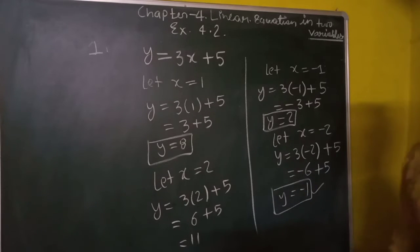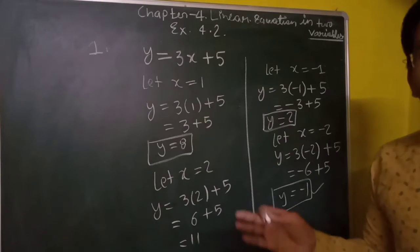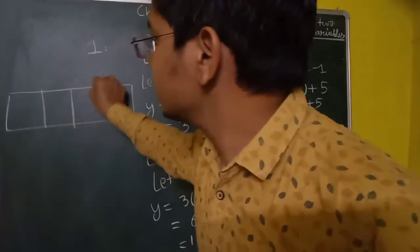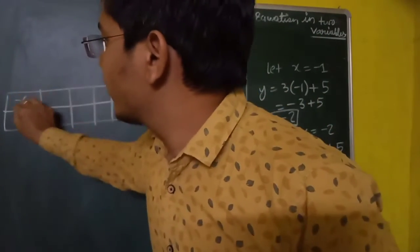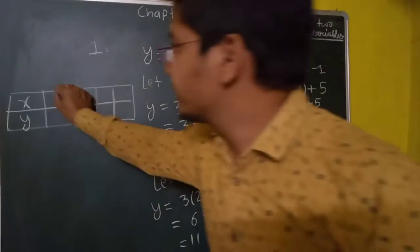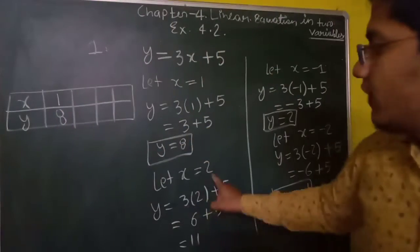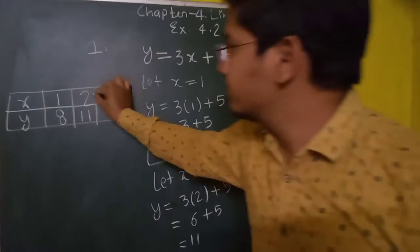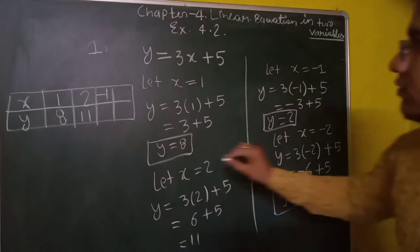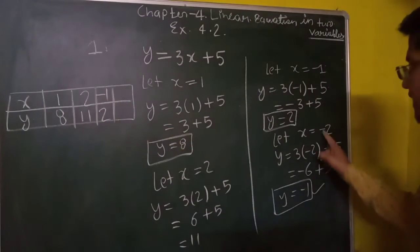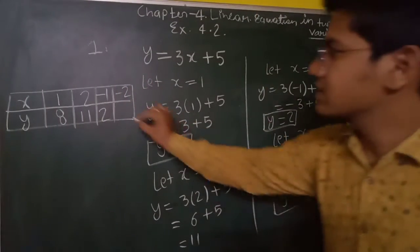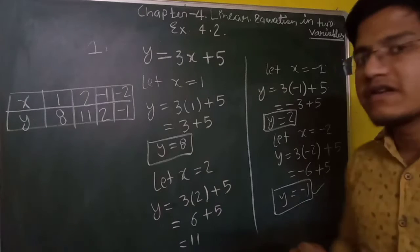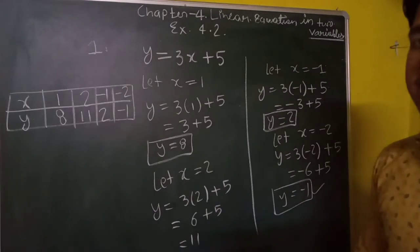These all are known as solutions of the given equation. If we put a value of x, we get a corresponding value of y. Now we can construct a table. We are considering values of x and we get corresponding values of y. x equals 1, y equals 8; x equals 2, y equals 11; x equals minus 1, y equals 2; x equals minus 2, y equals minus 1. These are 4 values of x corresponding to y. Now what is the question asking? Which of the following options is true and why?